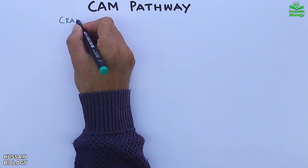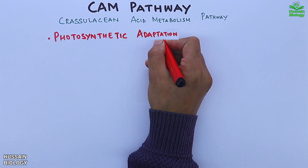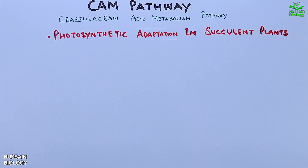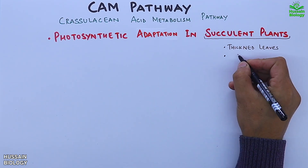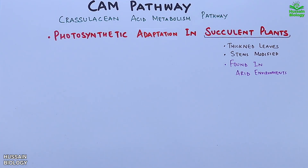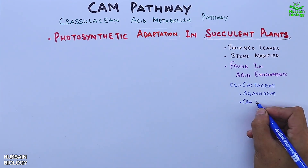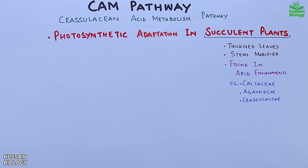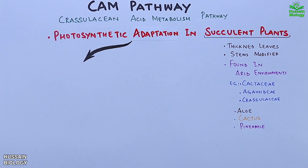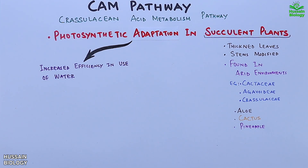In this video we'll be discussing the CAM pathway, that's Crassulacean Acid Metabolism pathway. It is a photosynthetic adaptation in succulent plants. Succulent plants have thickened leaves, modified stems, and are found in arid environments, which includes orders and families like Cactaceae, Agavaceae, and Crassulaceae, with common examples such as aloe, cactus, and pineapple. This CAM pathway is basically an adaptation for increased efficiency in the use of water.